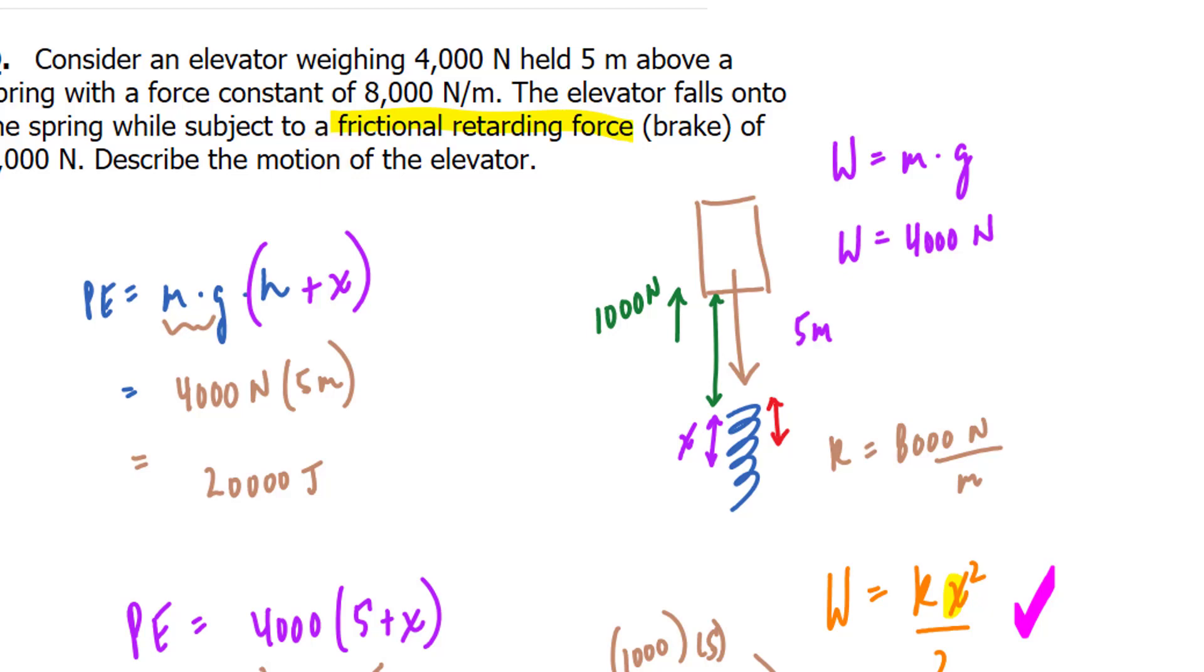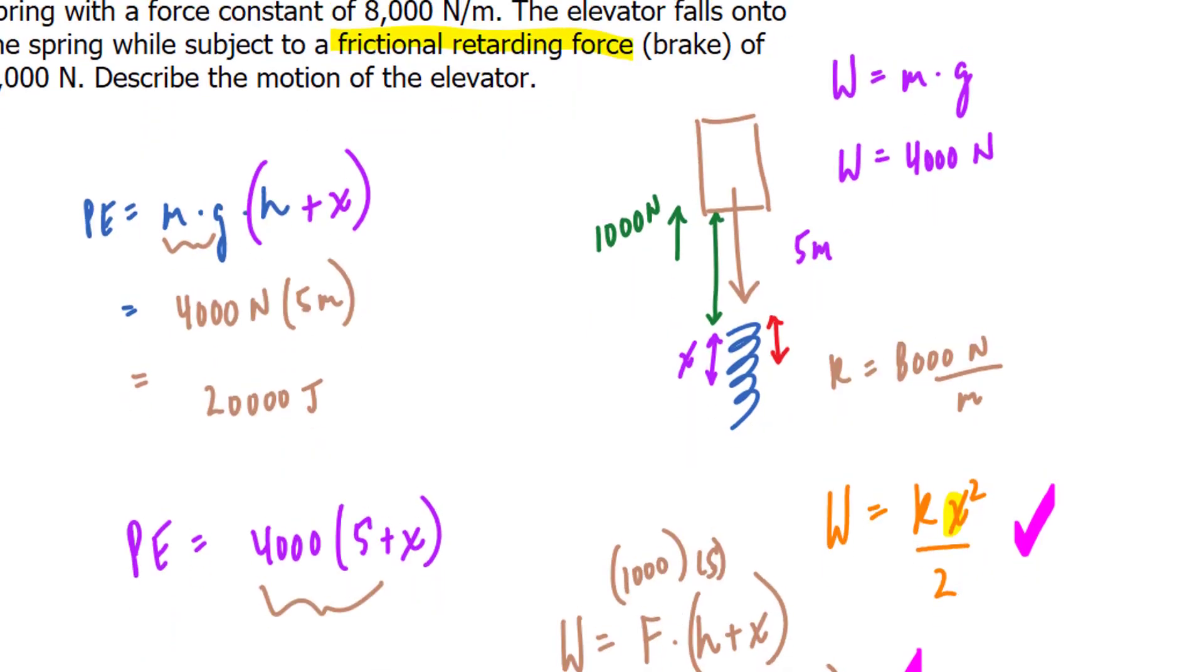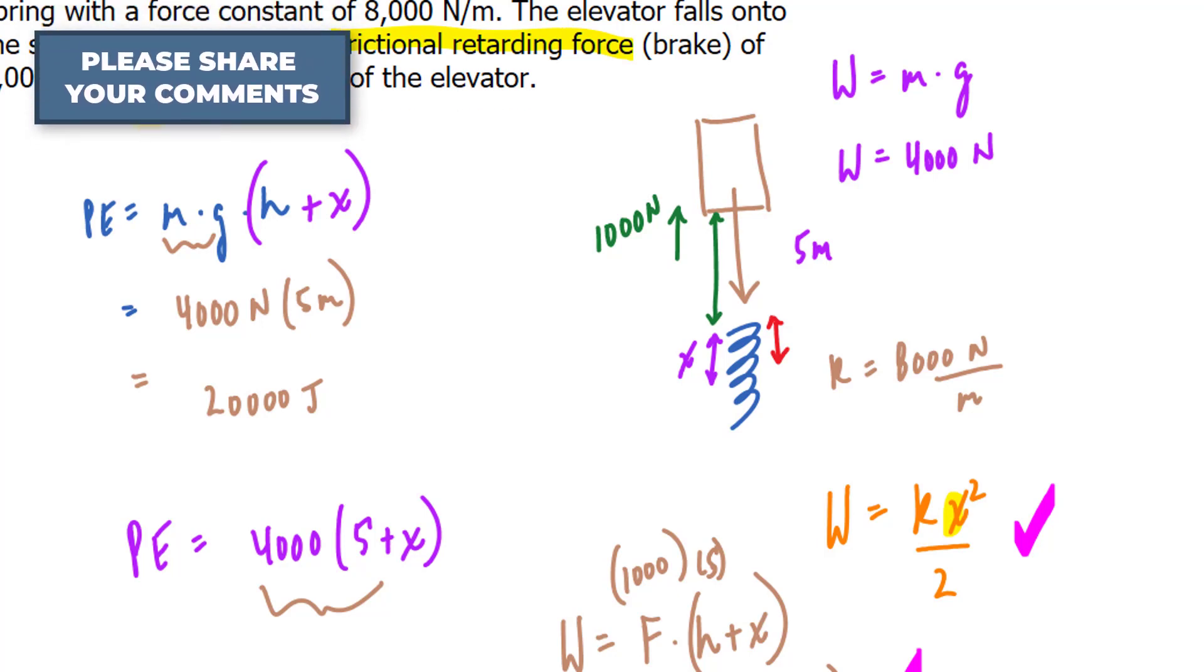you can use that kinetic energy along with the 1,000 newtons to find out how high back up it will go, and you would repeat the process until eventually all that energy is dissipated.